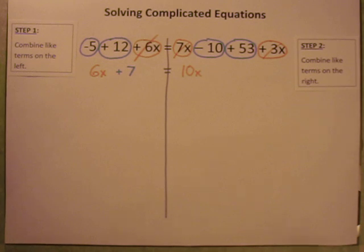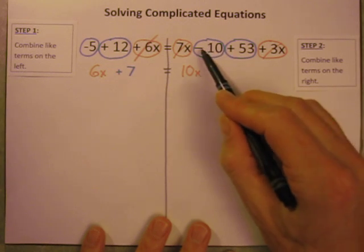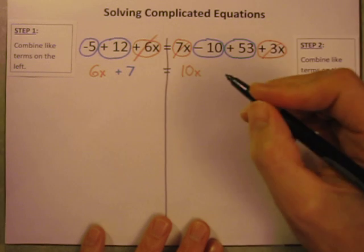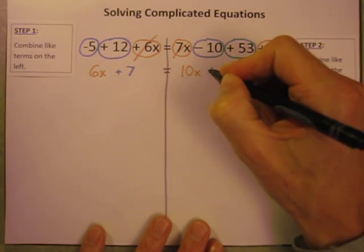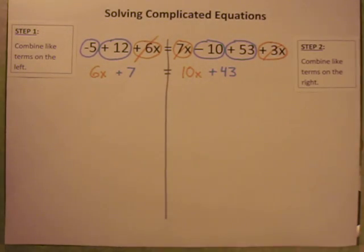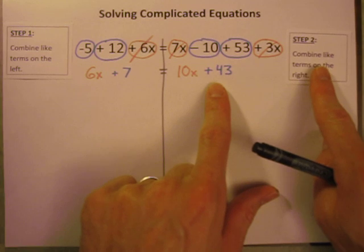So I can cross those off to know that I'm done with them. Now let's do the plain old numbers. Let's combine those like terms, negative 10 and positive 53. If I do negative 10 plus 53, I get a positive 43. So step one was combine like terms on the left. Step two was combine like terms on the right.